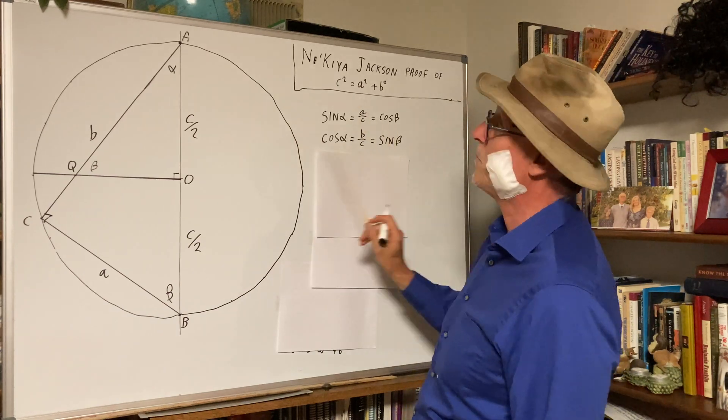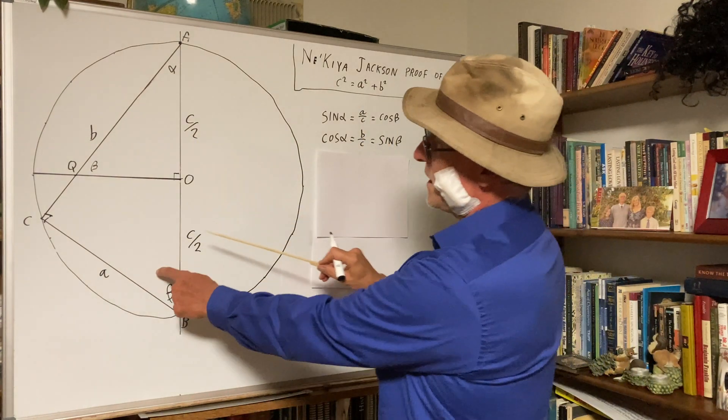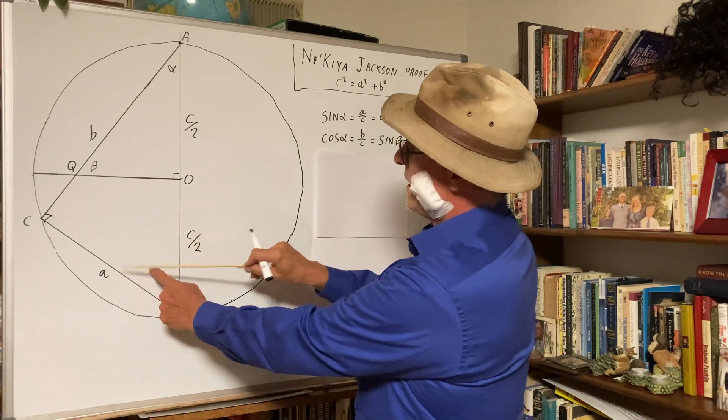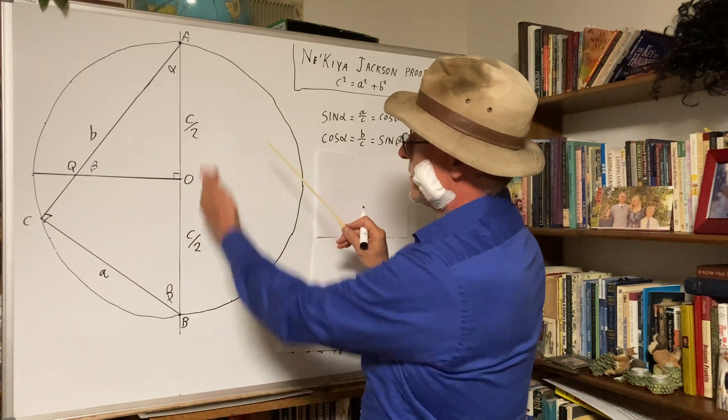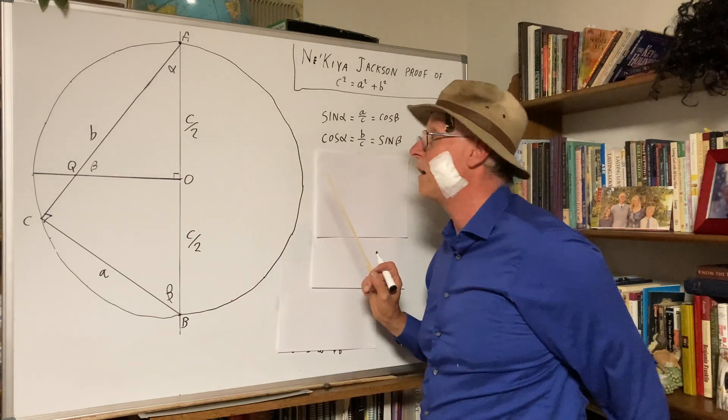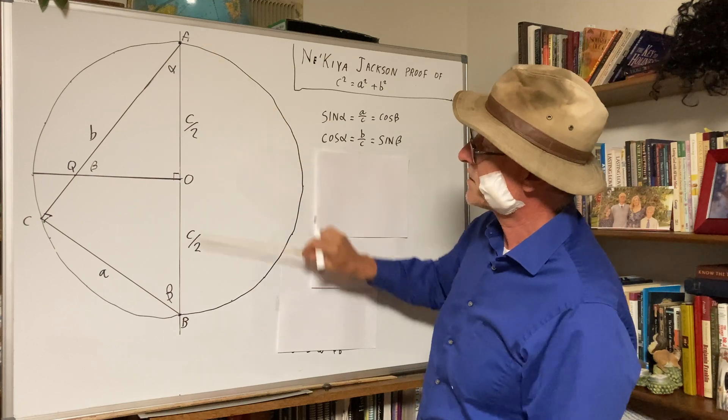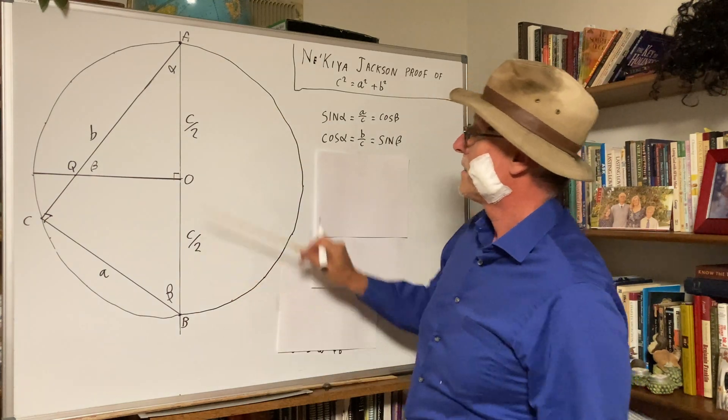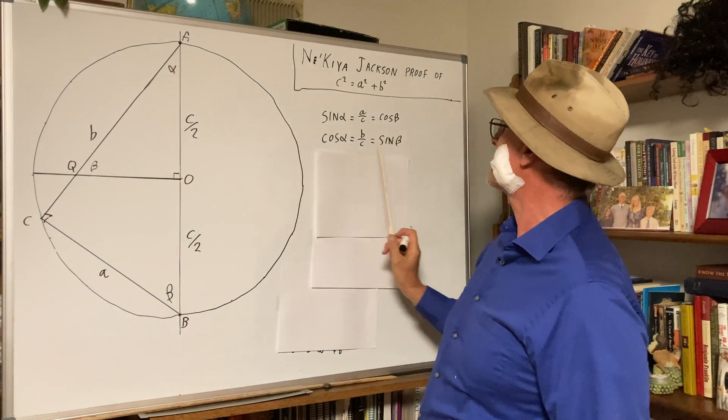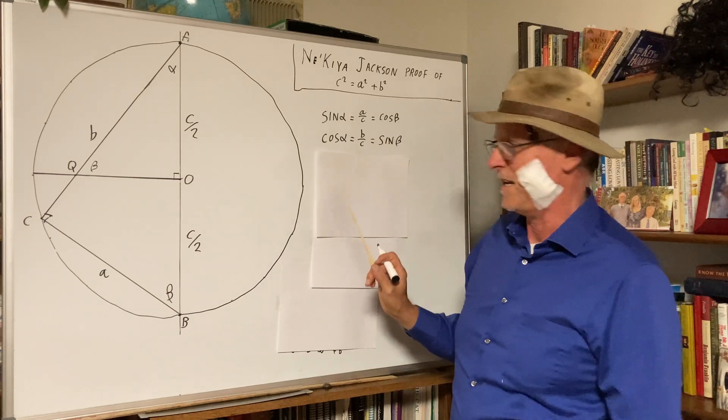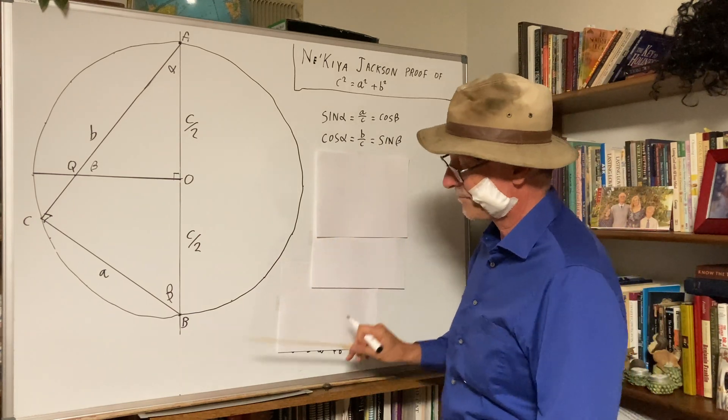But that's also cosine beta, which is A over C, adjacent over hypotenuse. And likewise, cosine alpha is B over hypotenuse, that's cosine alpha, which is the same as sine beta. That's the way trig works.